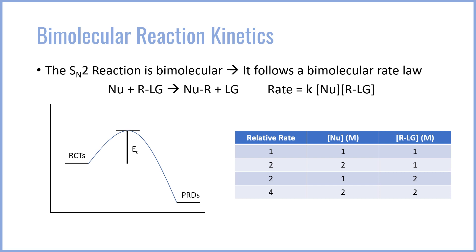Because it follows one rate-determining step and is bimolecular, you'll often see this information in a chart where relative rate is plotted against concentrations of nucleophile and substrate. If you double either the concentration of the nucleophile or the concentration of the substrate, you double the relative rate of reaction — a telltale sign of an SN2 process as opposed to SN1. If you double both concentrations, you quadruple the rate because the rate law is multiplicative: 2 times 2 gives a fourfold increase.